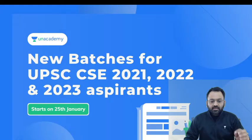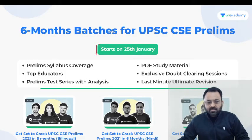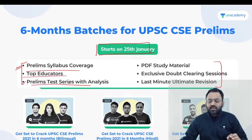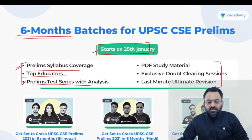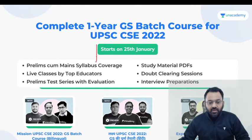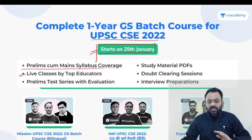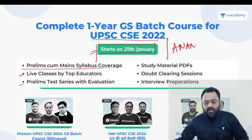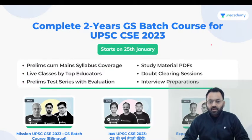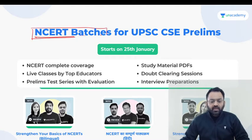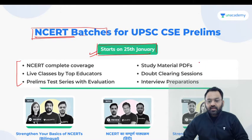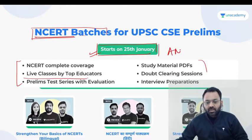First of all, the 25th January batch is starting on Unacademy, which covers everything regarding the prelims — total syllabus coverage, top educators, prelims test series, and everything. If your plan is one year, then you also have the one-year total batch starting on the 25th January, covering prelims and mains syllabus with live best educators, prelims test series, and total NCRT coverage. You can subscribe using a discount code.